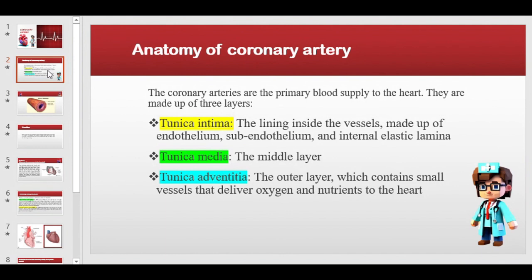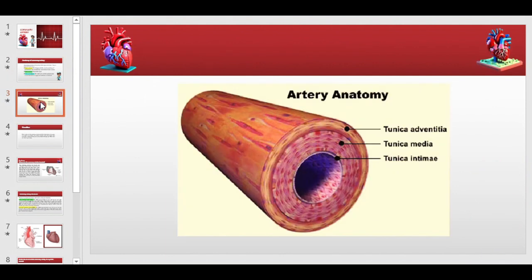The outermost layer is the adventitia, which contains small vessels that deliver oxygen and nutrients. The middle layer is the tunica media. The innermost layer is the tunica intima, which lines the inside of the vessels and is made up of the endothelium, subendothelium, and internal elastic lamina. This cross-sectional image demonstrates all three layers clearly for better understanding.